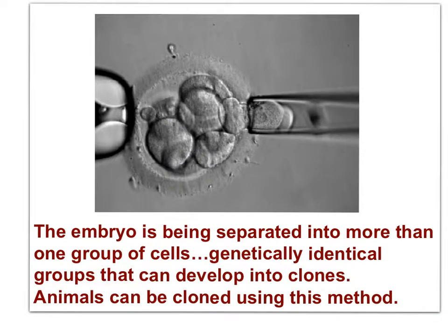The embryo is being separated into more than one group of cells — genetically identical groups that can develop into clones. Animals can be cloned using this method.